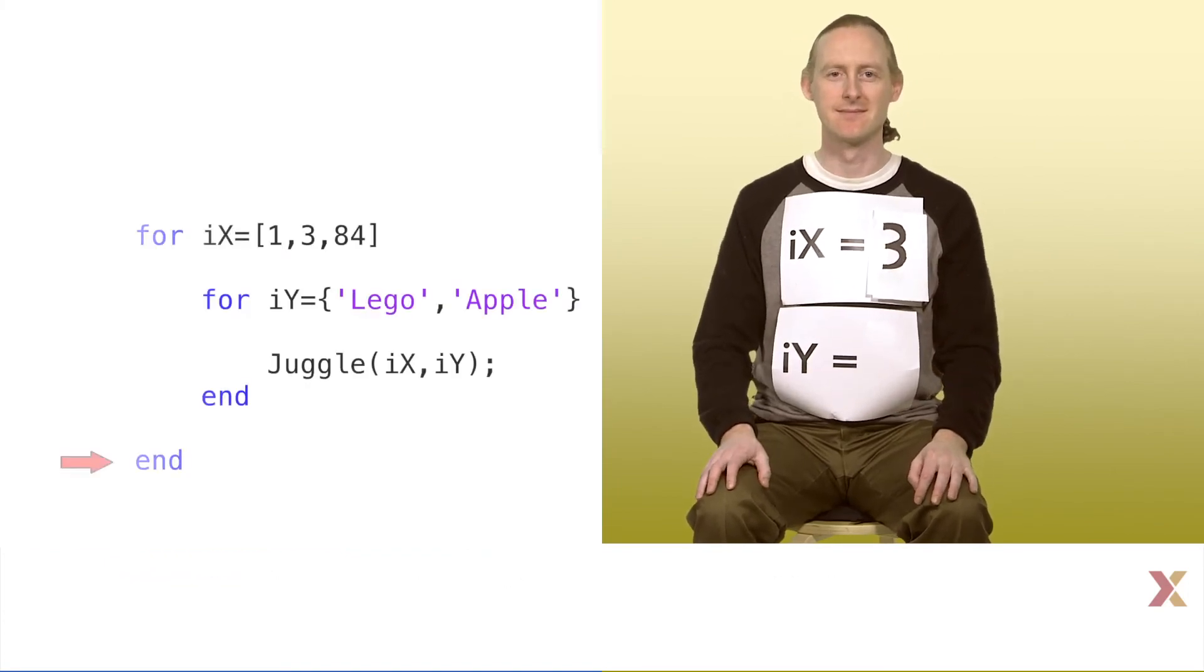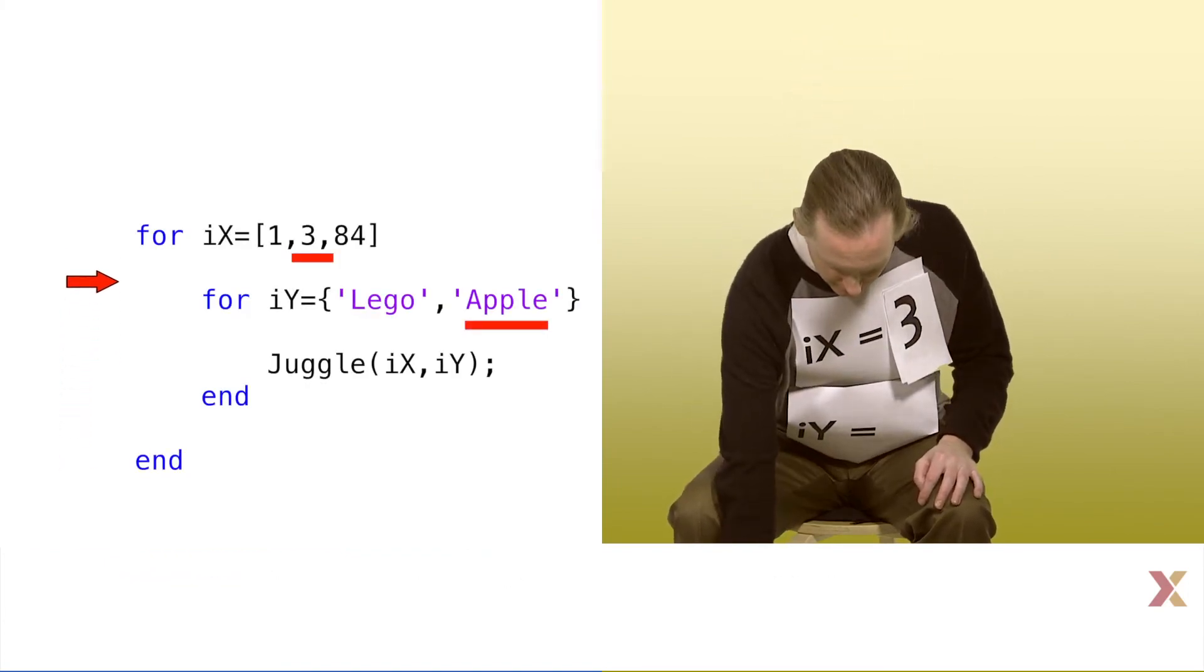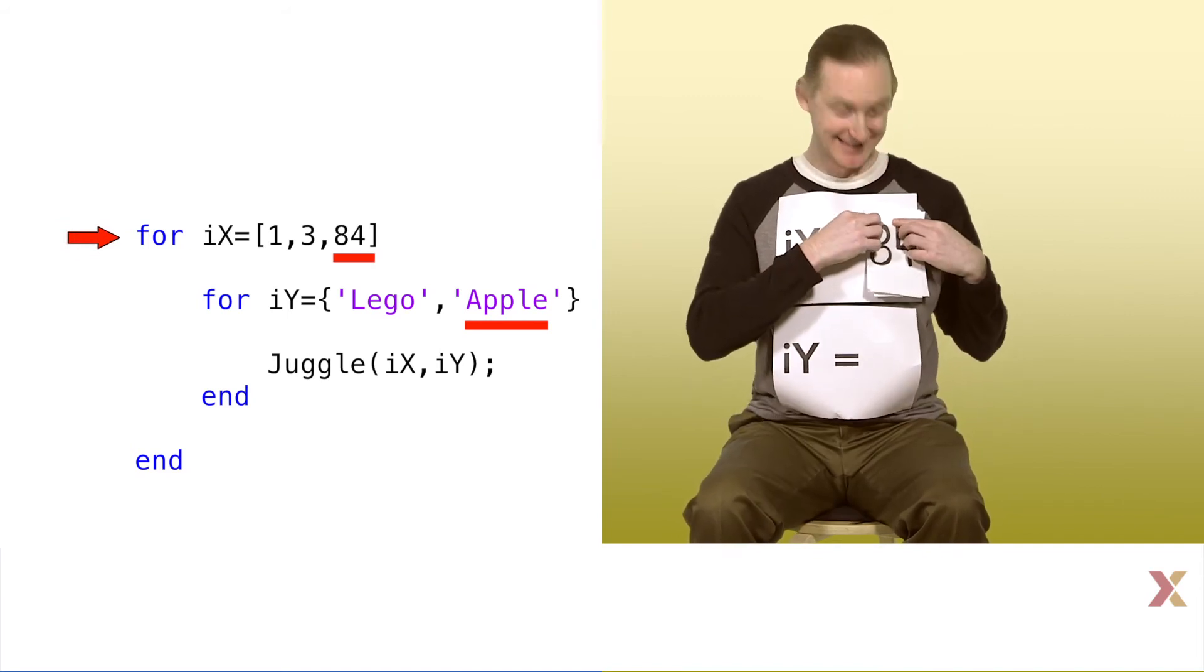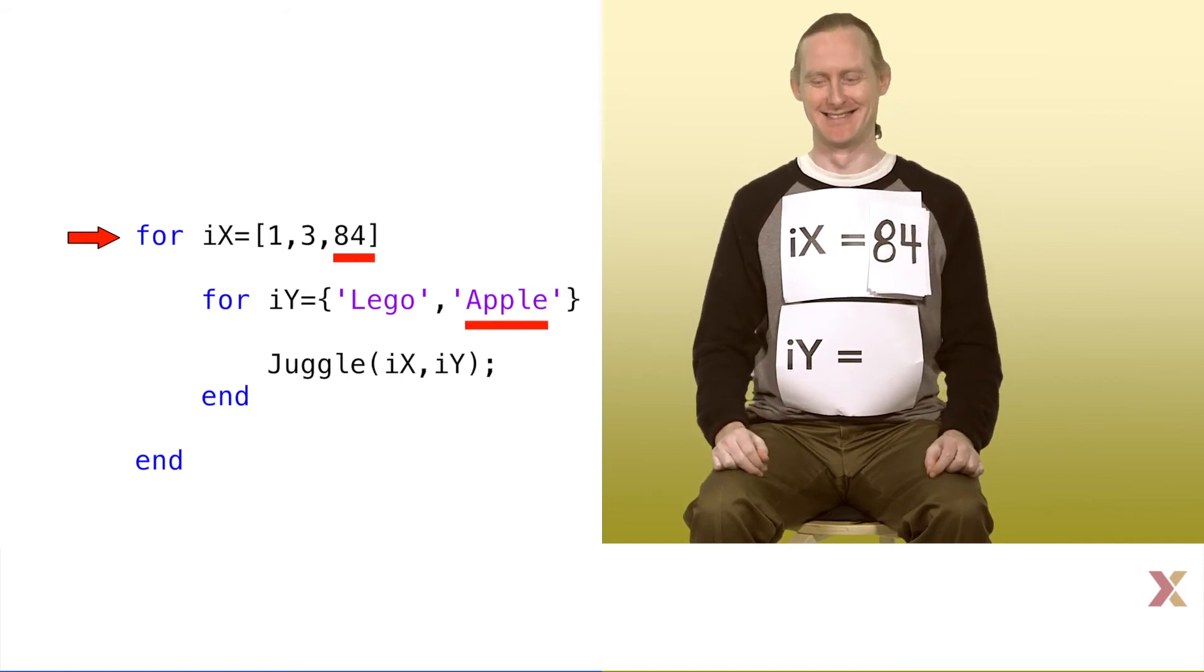Now we hit our end statements and the code updates the ix value. There is only one more element in the array, so this is the last time we will execute the outermost loop. This time the value is set to 84.